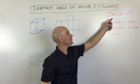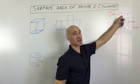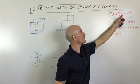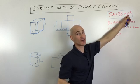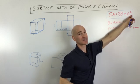To find the surface area of a prism you take two times the area of the base, that's what the capital B represents, plus the perimeter of the base, that's what the P represents, times the height.